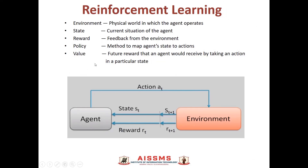With the help of this block diagram, we can understand reinforcement learning, where there is an environment, which is the physical world in which the agent operates. There is a state, where the current situation of the agent is given. There is a reward, which is nothing but the feedback from the environment. There are policies, which are the method to map the agent states to action. And there is a value, which is nothing but the future reward that an agent would receive by taking an action in a particular state.